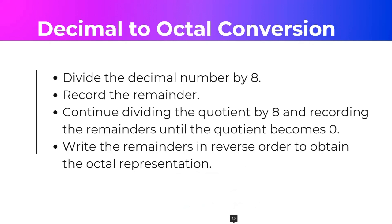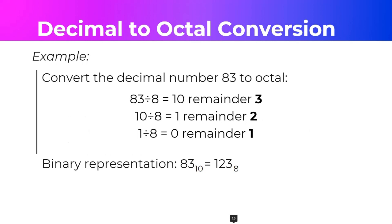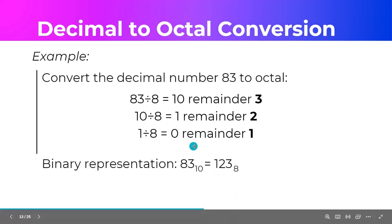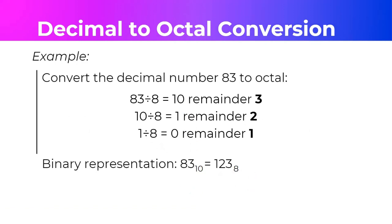Now let's have the octal conversion. As mentioned, just divide by the target base number. So for octal, divide the decimal by 8, then record the remainder in reverse order. Let's convert decimal 83: 83 divided by 8 is 10 remainder 3. Then 10 divided by 8 is 1 remainder 2. Then 1 divided by 8 is 0 remainder 1 — our quotient has reached 0. Reversing the remainders gives us 1, 2, 3 base 8. So 83 decimal is equivalent to 123 octal.